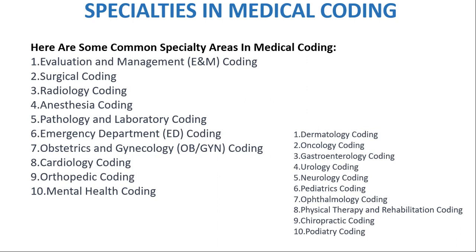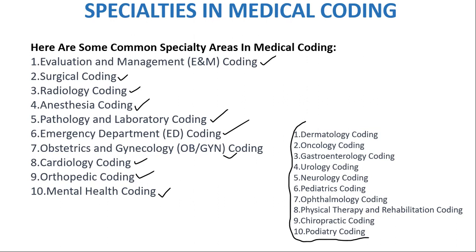Common specialty areas in medical coding include: Evaluation and Management (E&M) coding, surgical coding, radiology coding, anesthesia coding, pathology and laboratory coding, emergency department (ED) coding, obstetrics and gynecology (OB/GYN) coding, cardiology coding, orthopedic coding, and mental health coding. These are just a few examples. It's worth noting that some coders may choose to specialize in multiple areas or may focus on a specific subspecialty within a broader specialty.